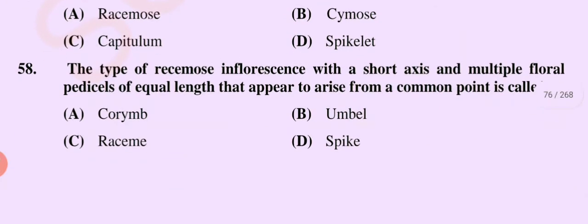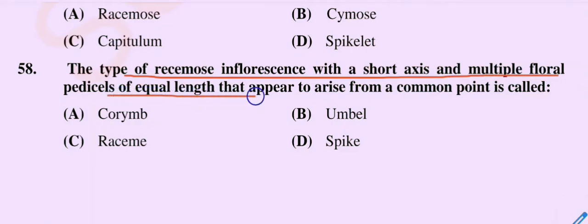Question number 58: The type of racemose inflorescence with a short axis and multiple floral pedicels of equal length that appear to arise from a common point is called — option A corymb, option B umbel, option C raceme, option D spike. The correct option is option B, umbel.